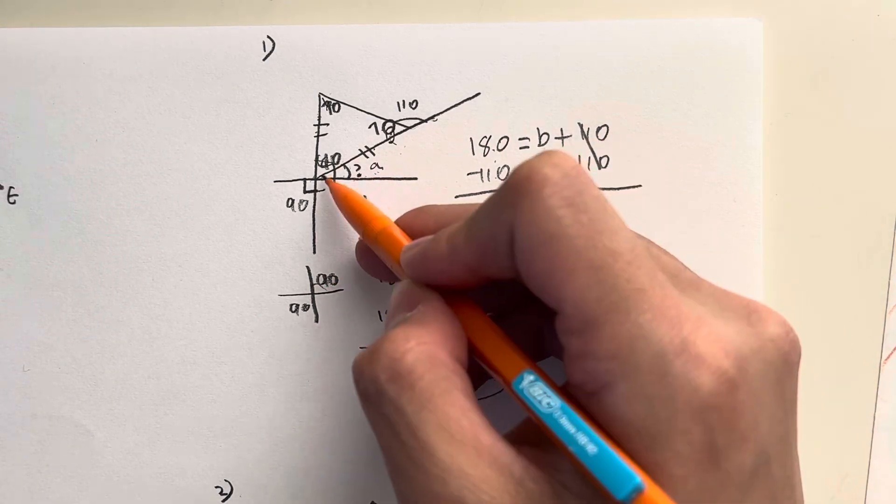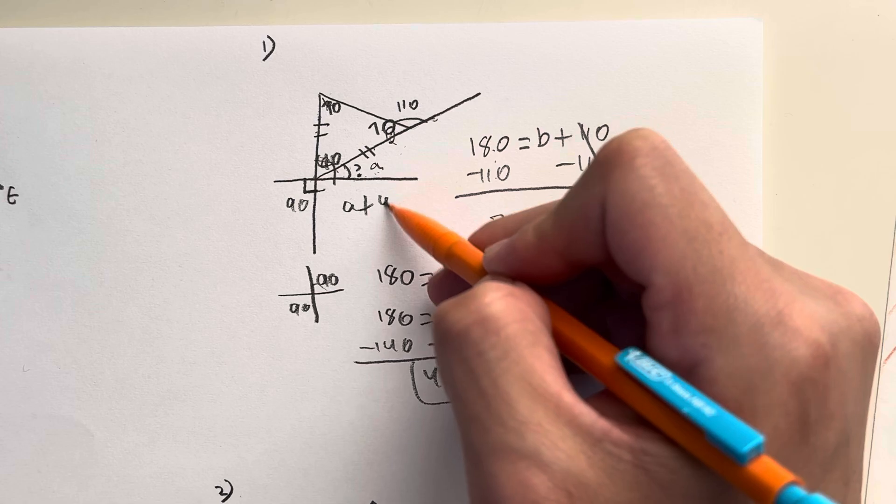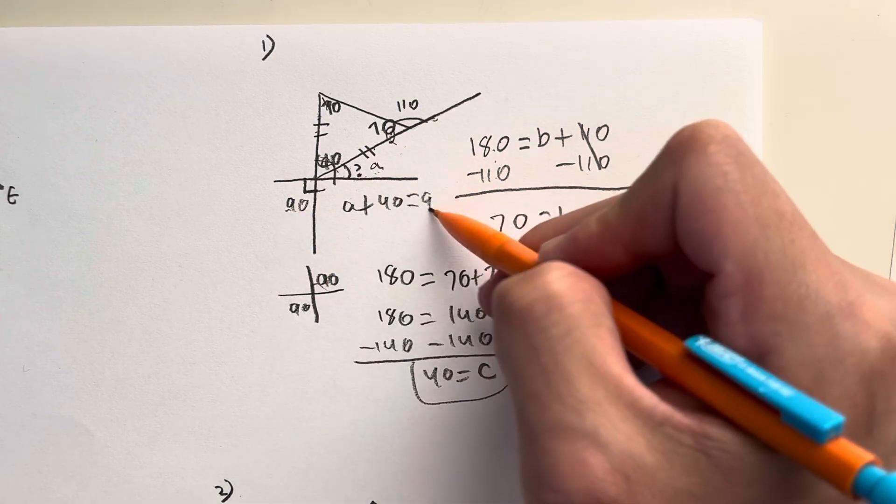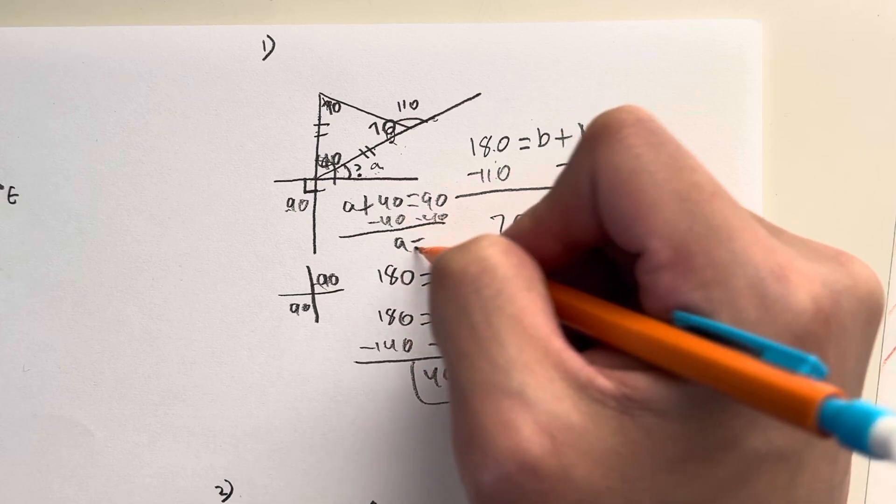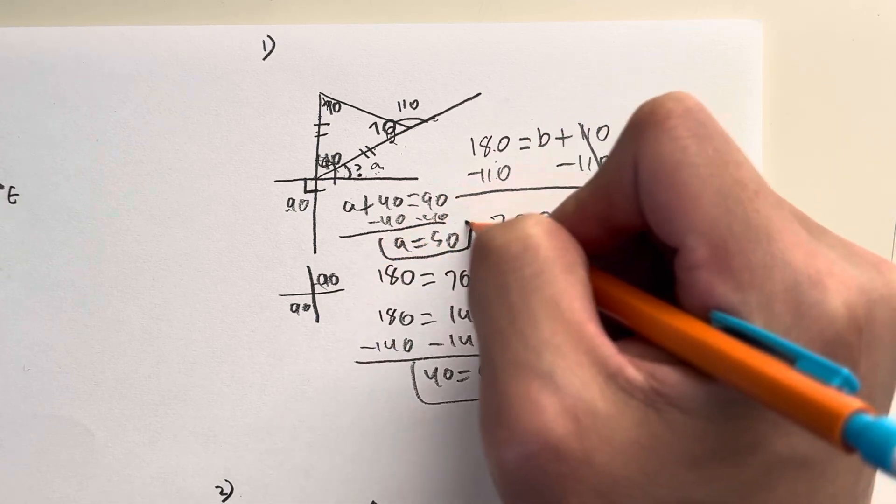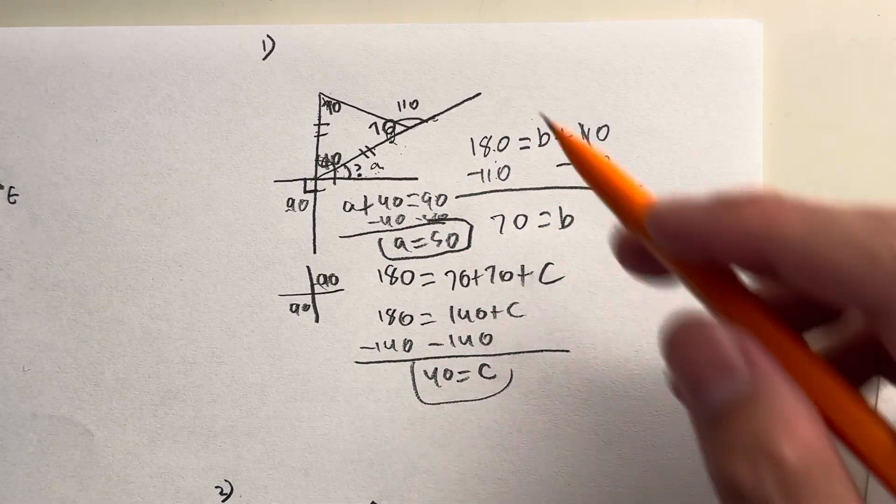So it gives me that A plus my angle right here which is 40 is equal to this angle right here which is 90. I can minus 40 on both sides. And finally that leaves me with A is equal to 90 minus 40 which is 50. And that right there is going to be your answer for number one.